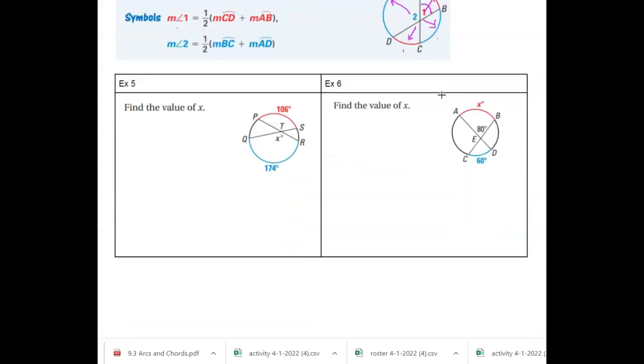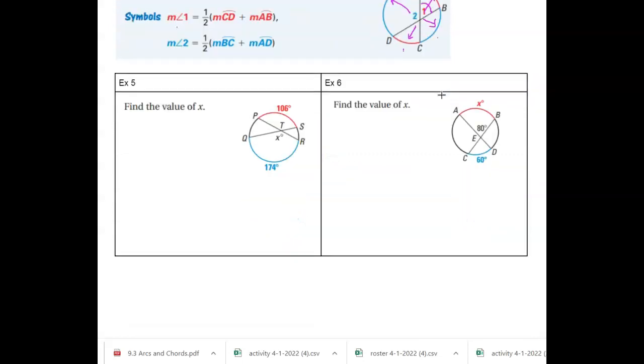So let's look at example number 5. So let's just find the value of x. I know here's x. And so the arcs that it's related to are right there. So I know x is equal to half of the two arcs added together. You could write this a bunch of different ways. I get half of, what is that?